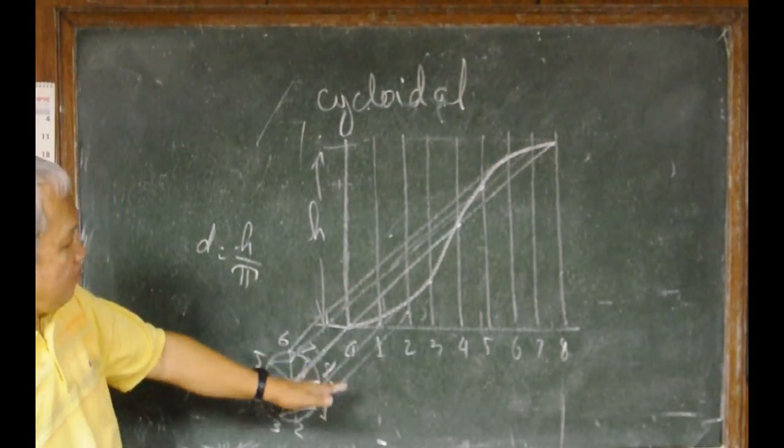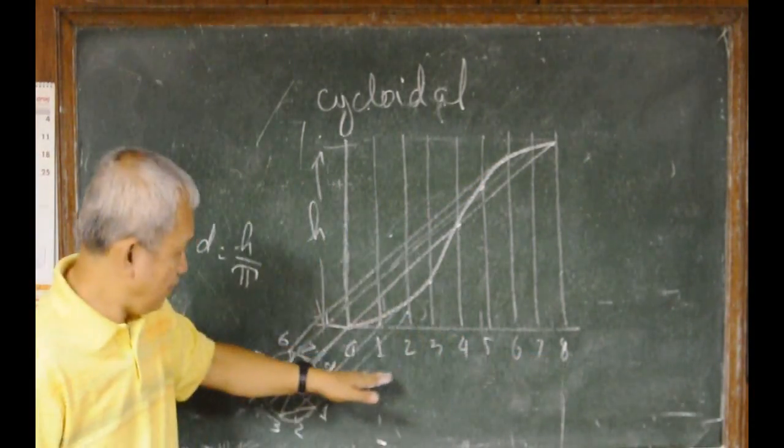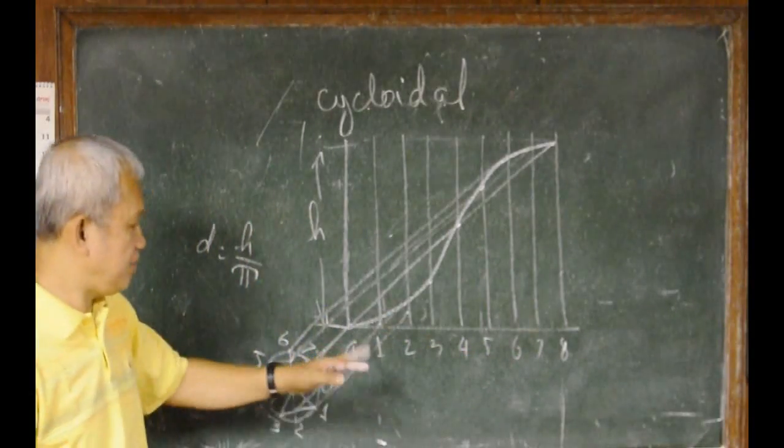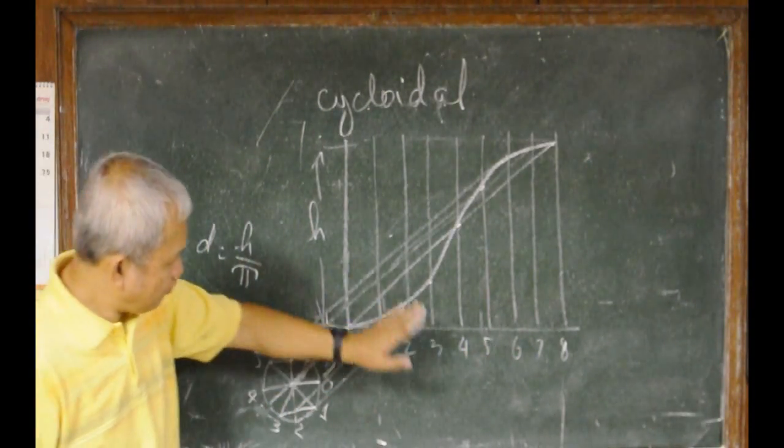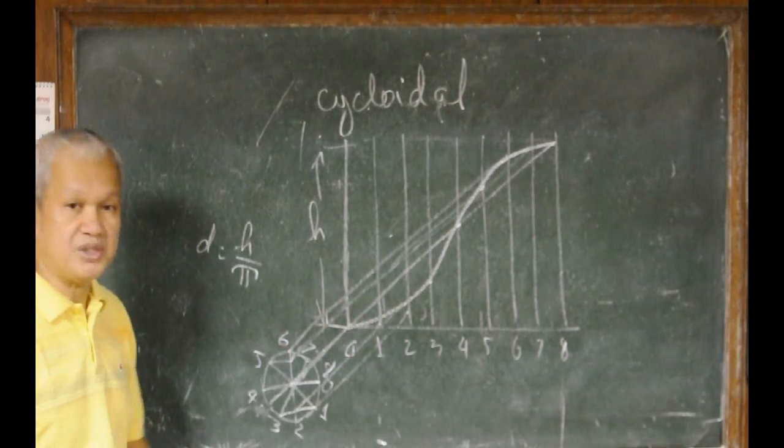And again, the number of divisions of this will be at your convenience. It can be 8, it can be 6, it can be 10, or 9, or 7. But for our example here, we used 8 divisions.